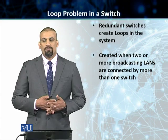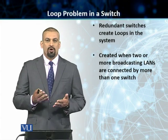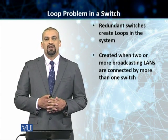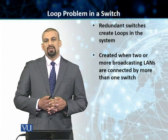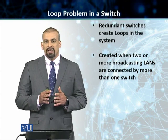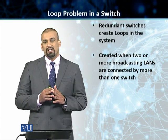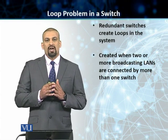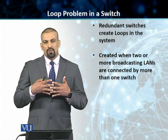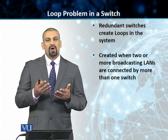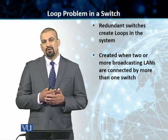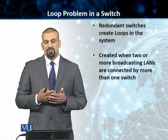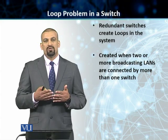We will now talk about another problem that is normally present when different broadcast LANs are connected through multiple switches. In modern data communication systems, redundancy is very important — and here redundancy means that we can have two networks connected through two different switches, so that if one switch fails, the other automatically takes over. We add redundancy by connecting the two networks using more than one switch.